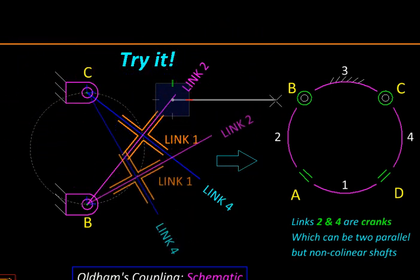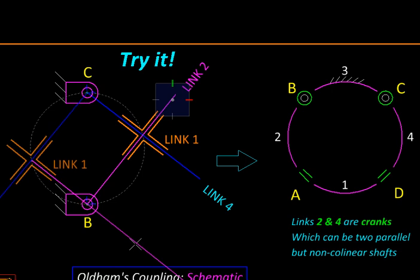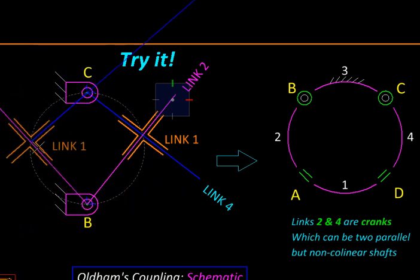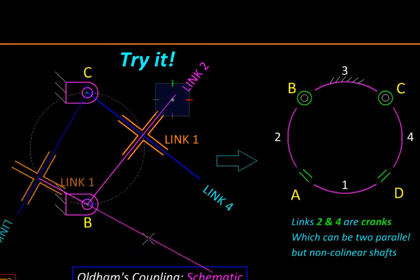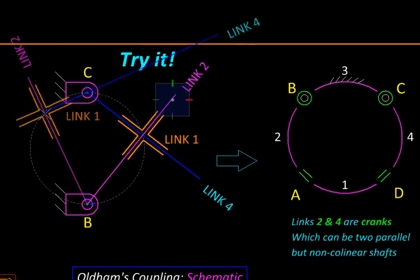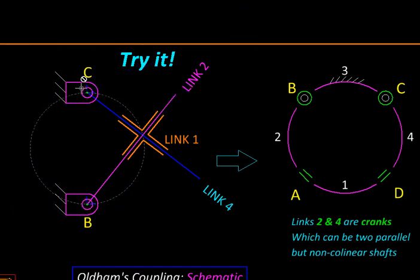So in effect, link two and four both are rotating through the same angle. Now where can such motion be used? Well, you can notice the axis of rotation of B and C are parallel to each other.